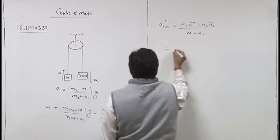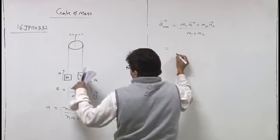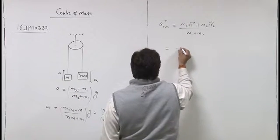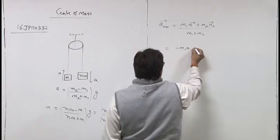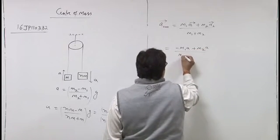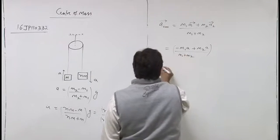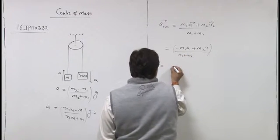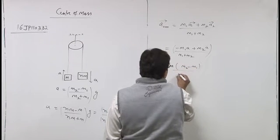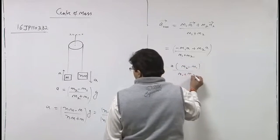Center of mass acceleration m1 a1. Let us suppose this is taken as positive and m1 is taken as negative. So minus m1 a plus m2 a divided by m1 plus m2. Downward is taken as positive. So a common, m2 minus m1 a divided by m1 plus m2.